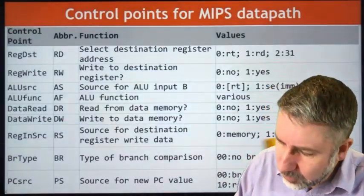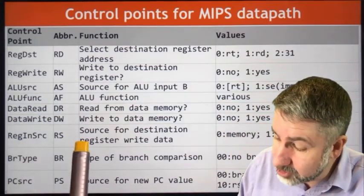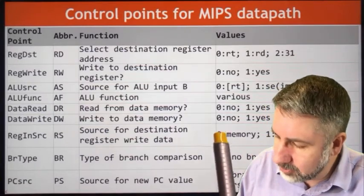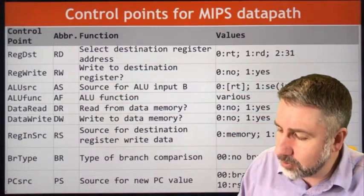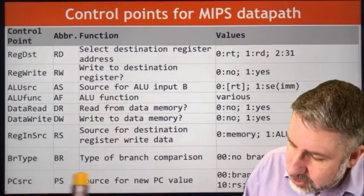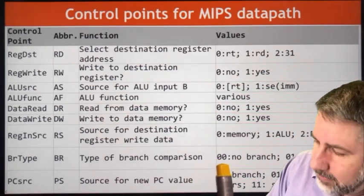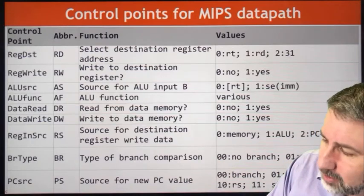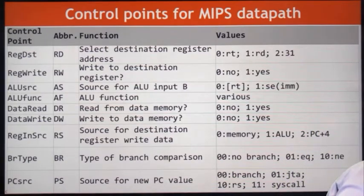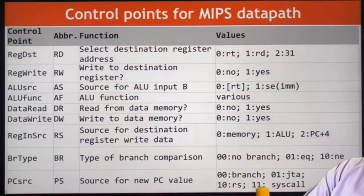Data memory read and write are straightforward. Register-in source is 0 for coming from memory, 1 for coming from the ALU, and 2 for PC+4, which is just for jump-and-link. Branch types represent different comparison types: 00 is no branch (for most instructions), 01 is branch if equal, and 10 is branch if not equal. PC source has four options: 00 for regular instructions, 01 for jump target, 10 for register source RS, and 11 for syscalls.